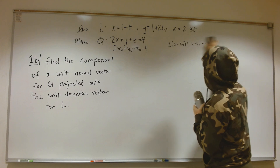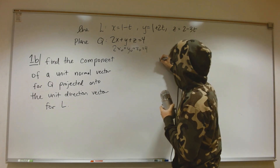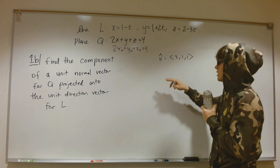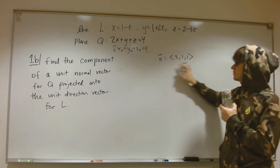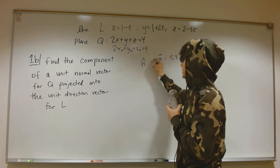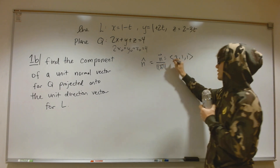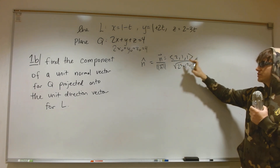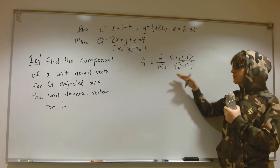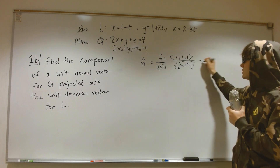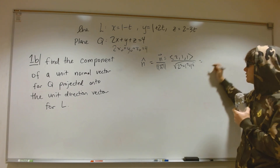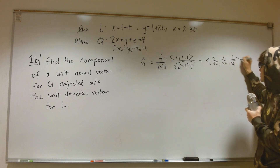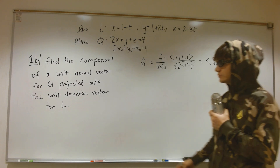The normal vector is n = (2, 1, 1). Now I want to make it a unit vector, so I divide by its length: √(2² + 1² + 1²) = √6. This gives the unit normal vector n̂ = (2/√6, 1/√6, 1/√6).